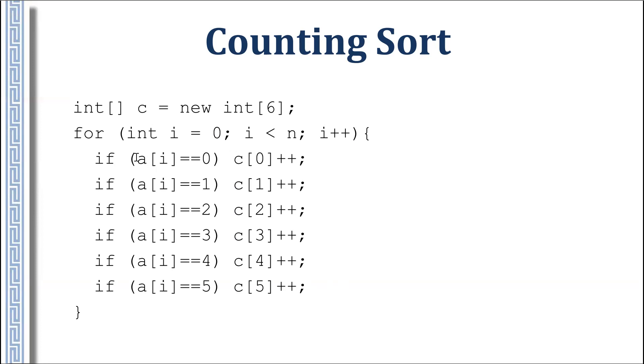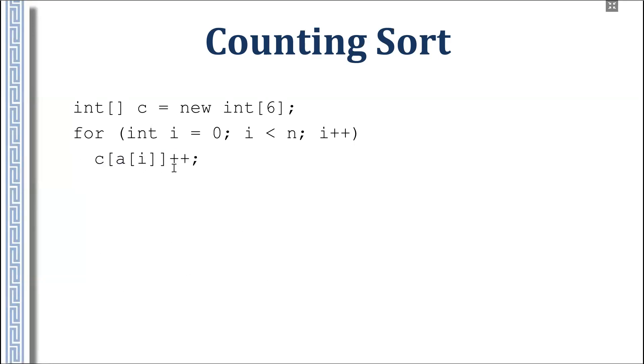We can write it shorter. You can see that if a[i] is zero, then the zero-th element increases in array c. We use array, not the variable c0, c1, c5, just for a short description. If a[i] is zero, then we increase element with this index. In fact, we increase the element with index that is a[i]. We can use c[a[i]] for increasing elements.